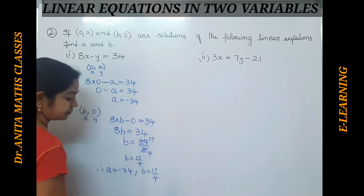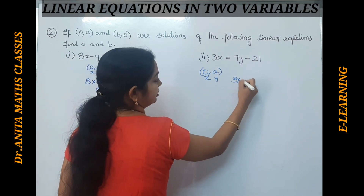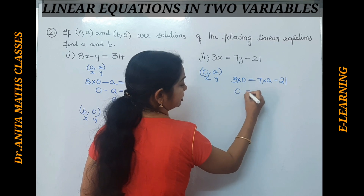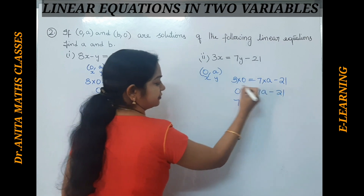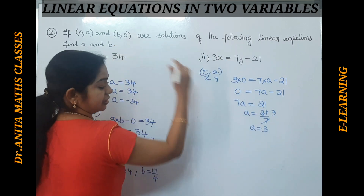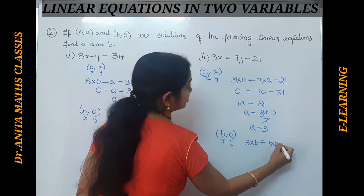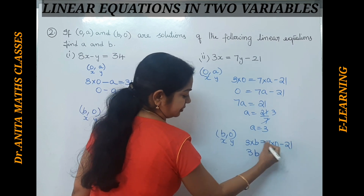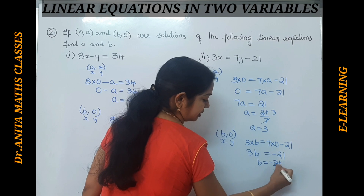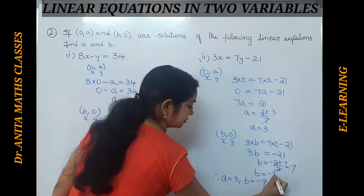For the second equation 3x equals 7y minus 21, substituting (0, a): 3 into 0 equals 7a minus 21, so 7a equals 21, giving a equals 3. For (b, 0): 3 into b equals 7 into 0 minus 21, so 3b equals minus 21, giving b equals minus 7. Therefore a equals 3 and b equals minus 7.